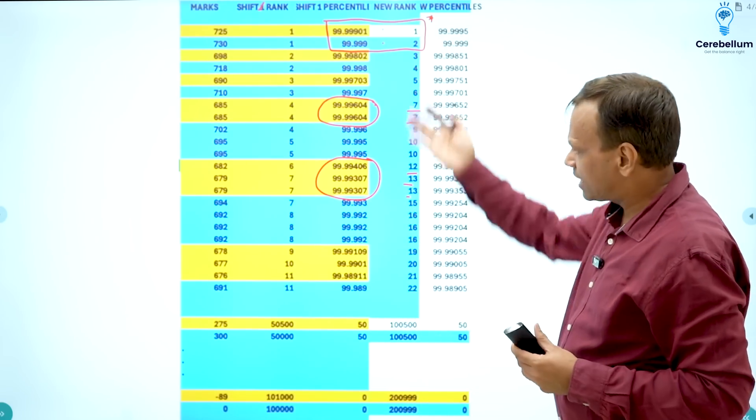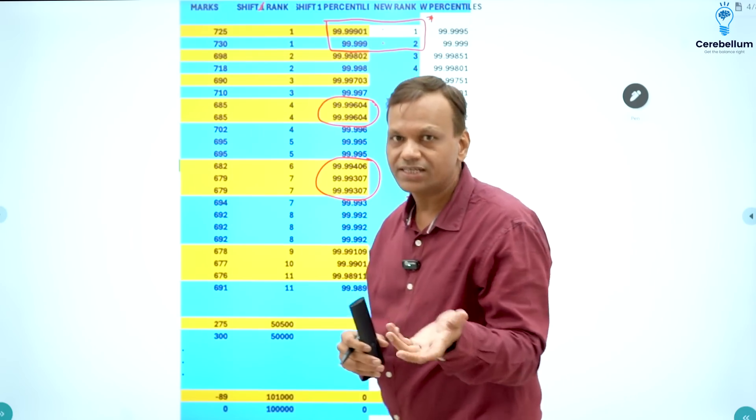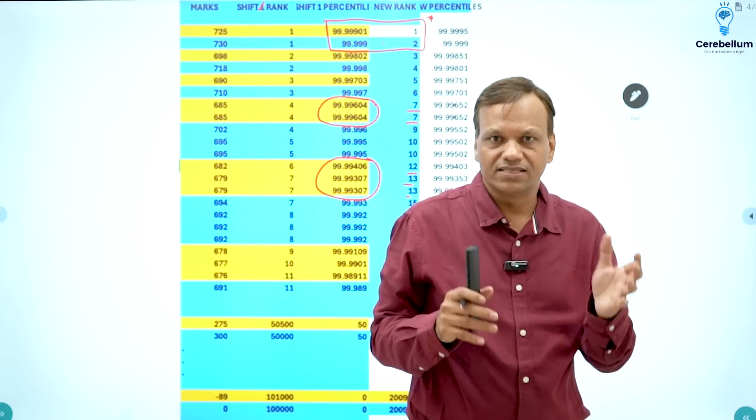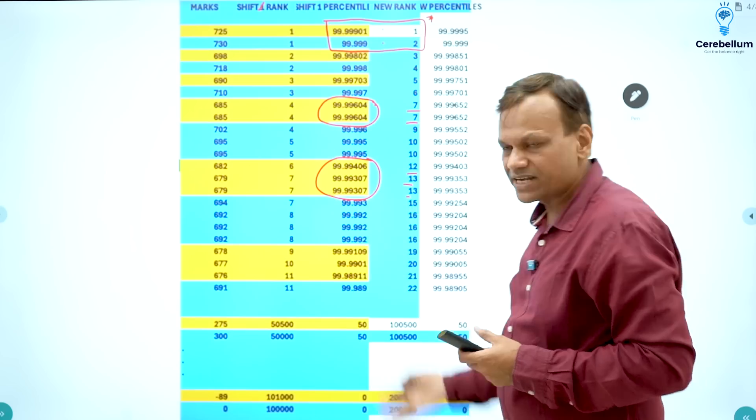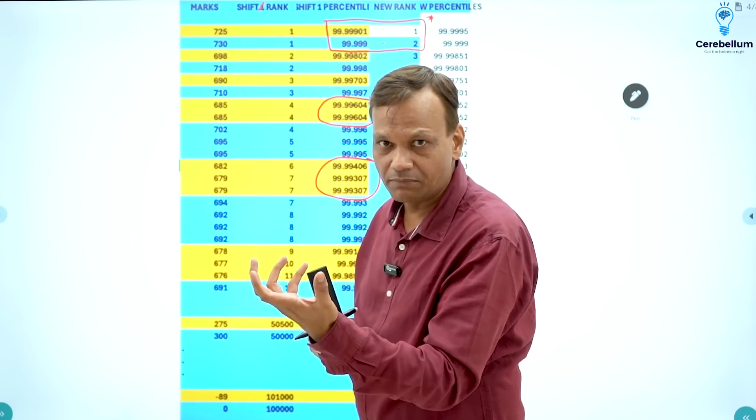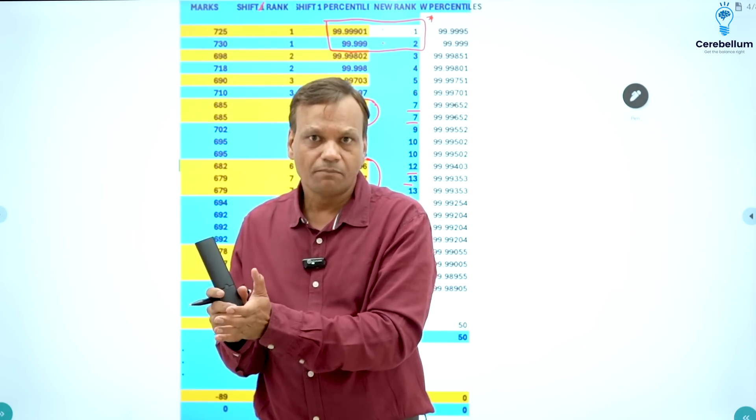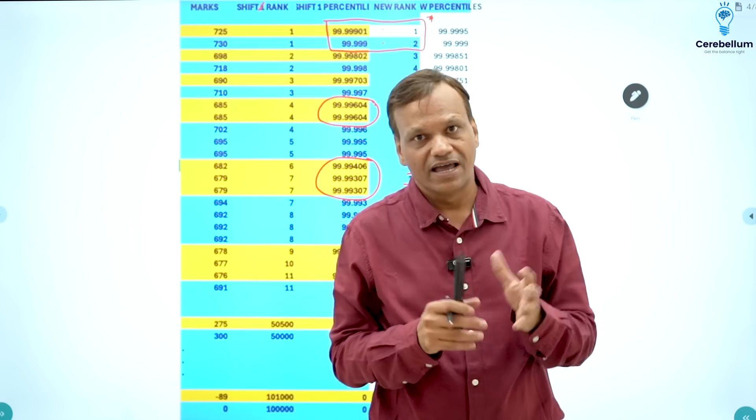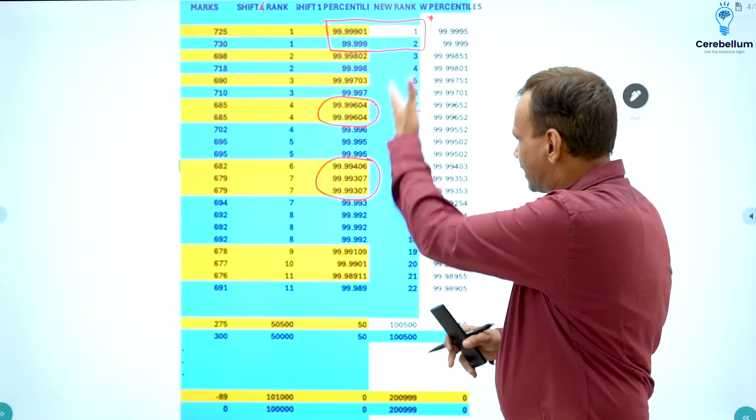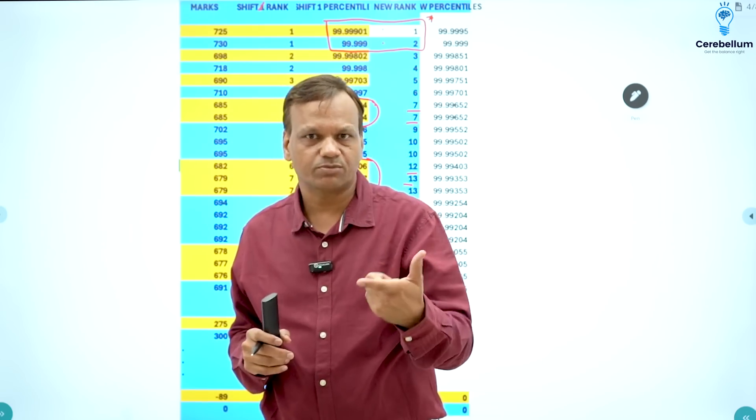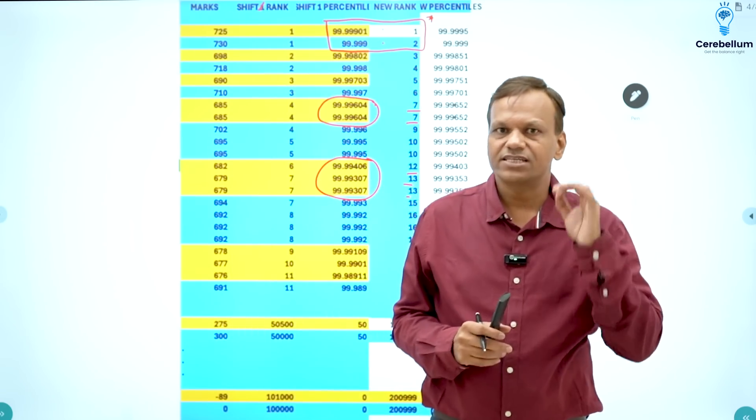Second important thing the students are asking, so this is not about advantage or disadvantage. This is the process. They have tried to make it fair that the students who have got difficult exams, they will obviously get lesser marks, but they should not be considered inferior to the other students who have got the easier exam. So that is the criteria how the normalization will be done. Okay, you understand? Now let me quickly explain it in Hindi.